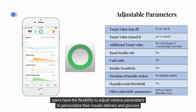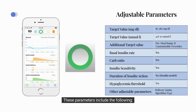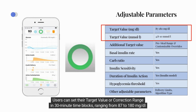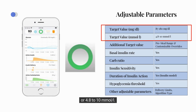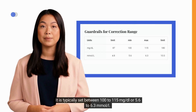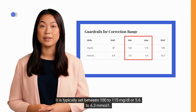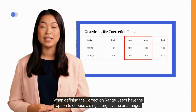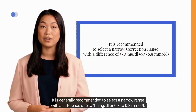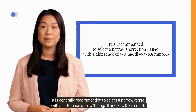Users have the flexibility to adjust various parameters to personalize their insulin delivery and glucose management. Users can set their target value or correction range in 30-minute time blocks, ranging from 87 to 180 mg/dL or 4.8 to 10 mmol/L, typically set between 100 to 150 mg/dL or 5.6 to 6.3 mmol/L. When defining the correction range, users can choose a single target value or a range, with a recommended narrow difference of 5 to 50 mg/dL or 0.3 to 0.8 mmol/L.